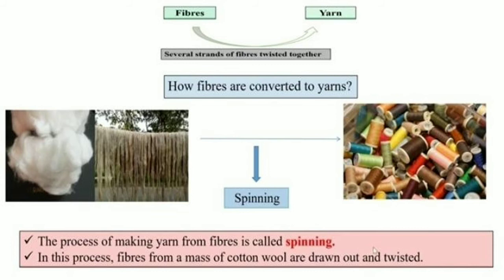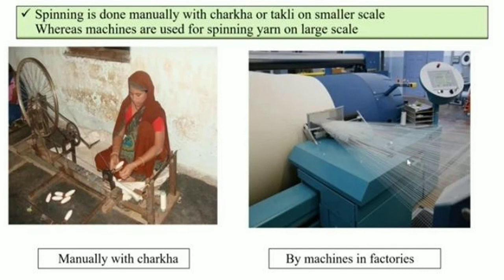We have already learnt that several different strands of fibers are twisted together to form yarn. Now how are these yarns formed? That means how are fibers converted into yarns? The process in which fibers are converted to yarns is called spinning. The process of making yarn from fibers is called spinning. In this process, fibers from a mass of cotton wool are drawn out and twisted. Spinning is done manually with a charka or takli on a smaller scale, whereas machines are used for spinning yarn on a large scale.